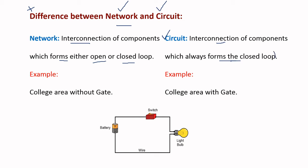A closed loop means the starting terminal and ending terminal are at the same point. A circuit is always a closed loop, whereas a network may be either a closed or an open loop. A practical example of a network is a colony without a gate, and an example of a circuit is a colony with a gate.